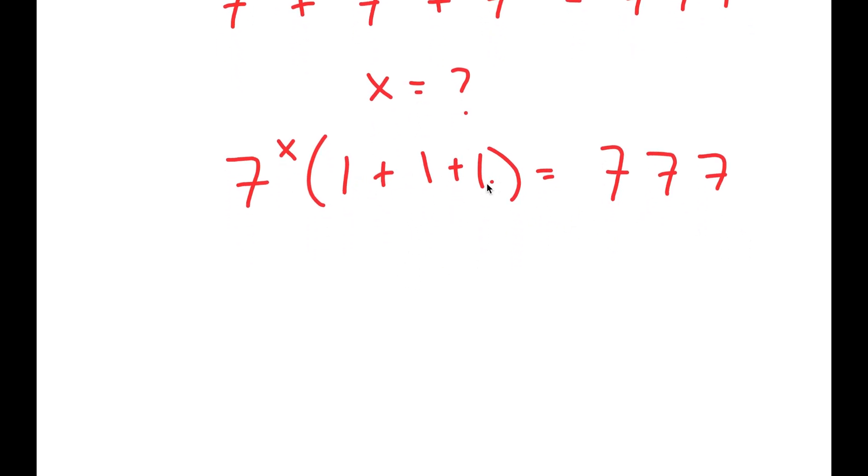Now, 1 plus 1 plus 1 is 3, so I get 3 times 7 to the power of x is equal to 777.